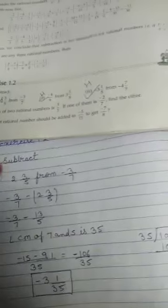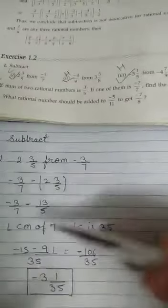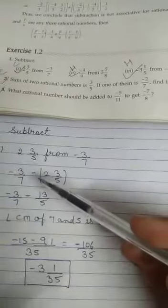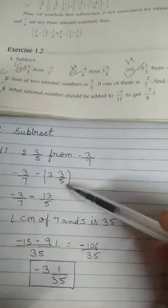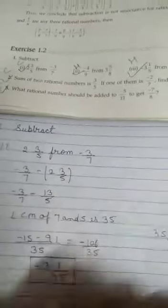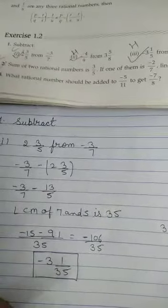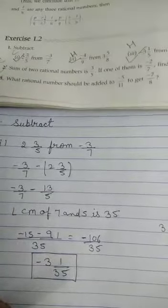We have to subtract 2, 3 by 5 from minus 3 upon 7. So first we write minus 3 upon 7 and then we subtract this number.